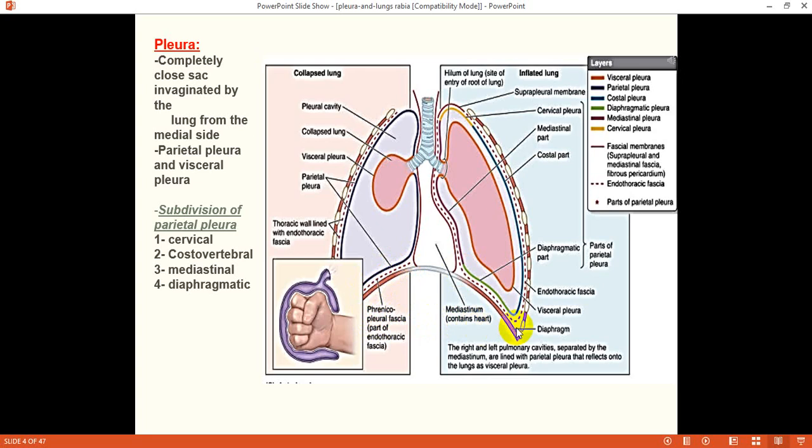The costal surface is separated from the thoracic wall by loose connective tissue fascia which is called endothoracic fascia. Basically, this endothoracic fascia is continued on the diaphragmatic surface as phrenicopleural fascia and also partially on the mediastinal surface. The part above the thoracic inlet is thickened to form the suprapleural membrane, which protects the apex of the lung protruding into the root of the neck.